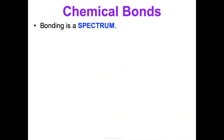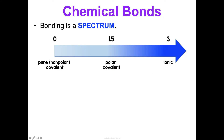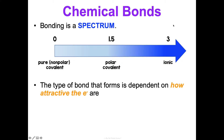The most important thing to understand is that bonding is a spectrum. It's more fluid than the distinct categories I'm going to teach you. I'll teach you three types of bonds: ionic bonds, metallic bonds, and covalent bonds. But it's really a continuous spectrum of attractiveness of electrons, because the type of bond that forms is entirely dependent on how attractive the electrons are.